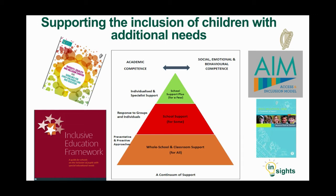In some instances, specialist equipment is supplied to support a young child who may be encountering challenges in the early learning and care environment for various reasons. These could be mobility difficulties, sensory sensitivities or social and communication difficulties. Additional practitioners may be employed to further support a child in the learning environment who has significant challenges in participating in learning activities or in having calm, comfortable learning experiences. To support consistency of experience for the child, it is really important that the junior infant teacher is aware of the children's strengths, needs and specialist areas of interest and understands the AIM plans and supports that were in place in the early learning and care setting. In so far as possible, these supports need to be replicated in the junior infant classroom.